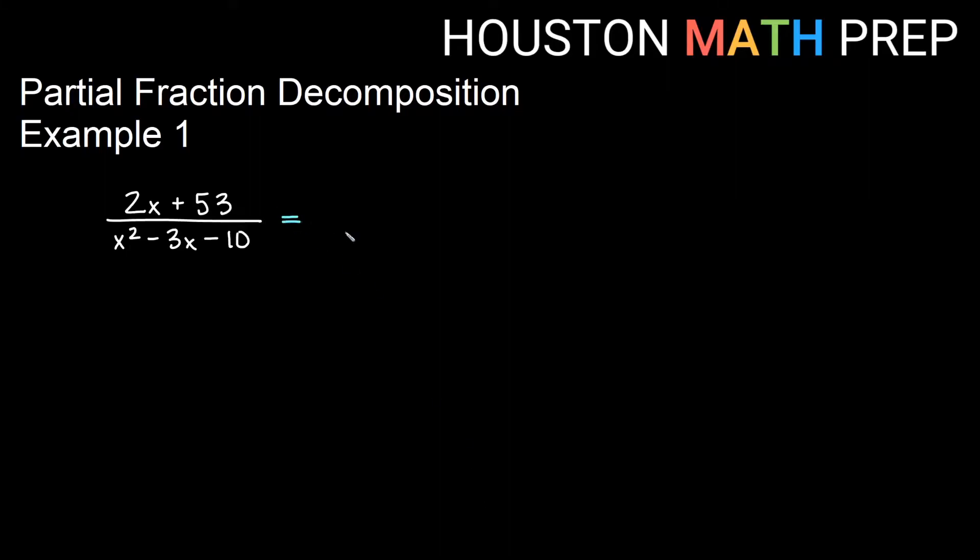We're going to go ahead and factor our denominator. So we'll go ahead and say 2x plus 53 over the factored version of x squared minus 3x minus 10. You might look at that for a second, and you'll notice that it is x minus 5 and x plus 2.